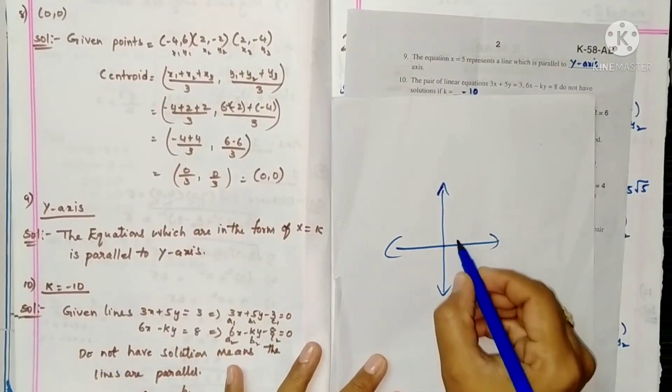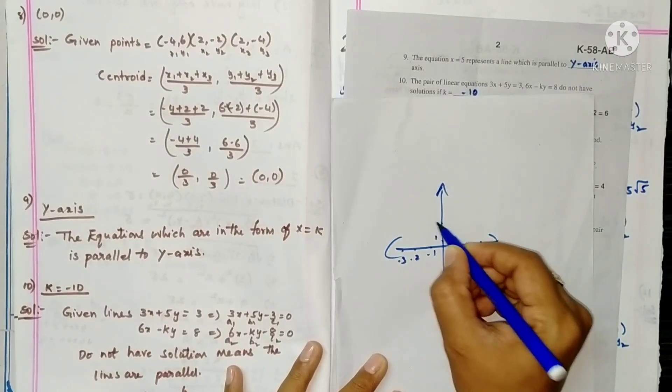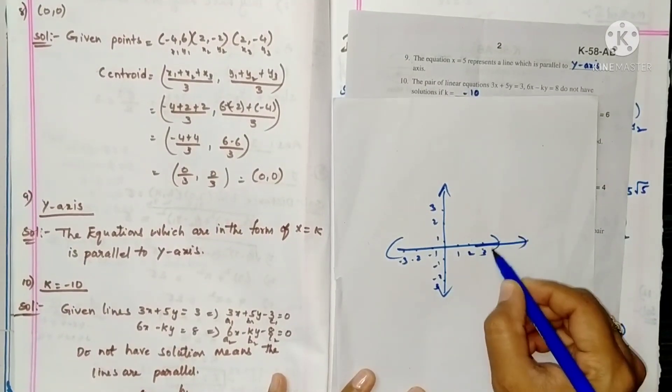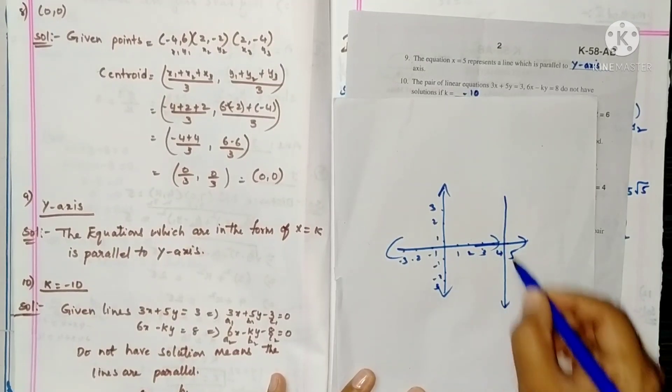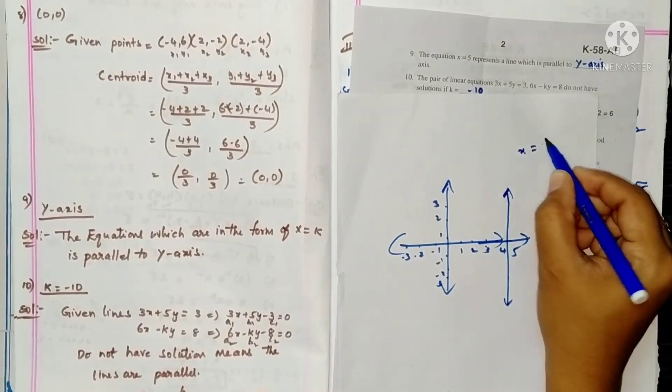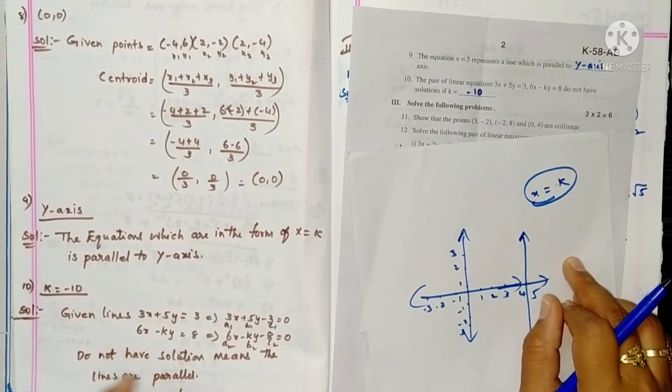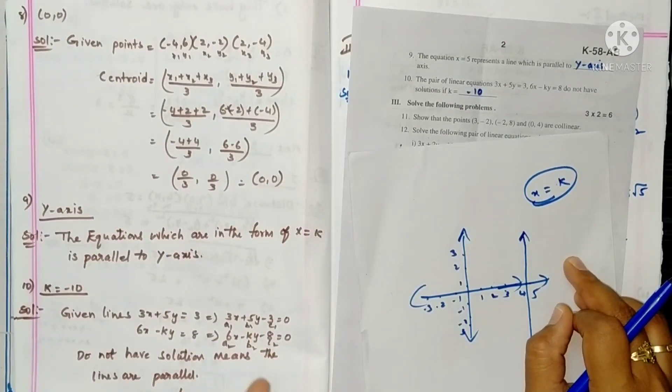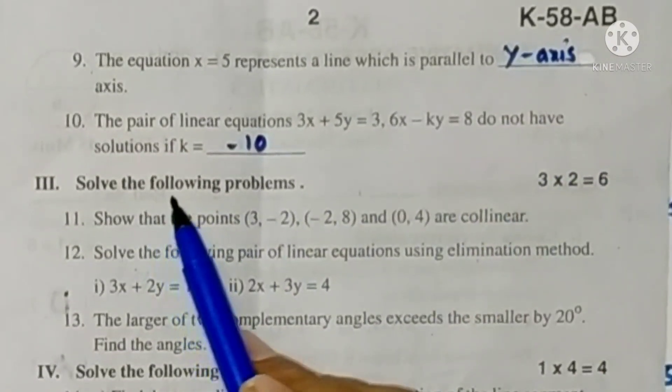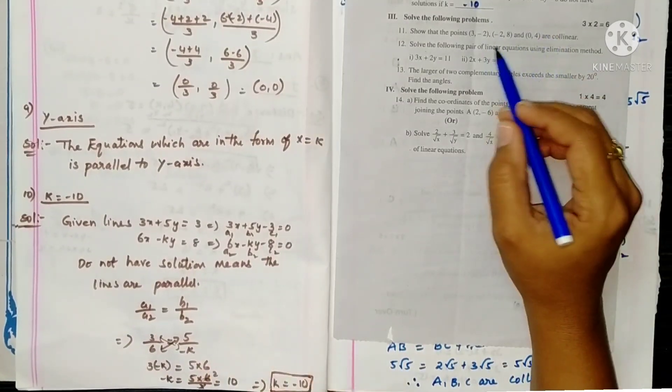Ninth one, the equation x equals to 5 represents a line which is parallel to - if you observe the graph, this is x-axis and this is y-axis. If you draw the graph of x equals to 5, this line is parallel to y-axis. So x equals to something means that lines are parallel to y-axis. If you know this concept, you can write y-axis as the answer. Tenth one, the pair of linear equations do not have solution if k equals to - do not have solution means a1 by a2 equals to b1 by b2, they must be parallel. So write like this, find the k value - we get minus 10.